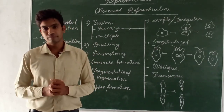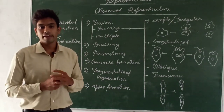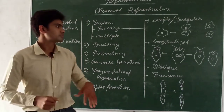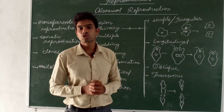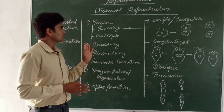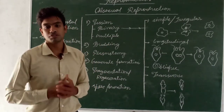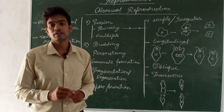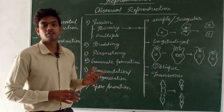Key points about binary fission: first, the nucleus divides amitotically, then the cytoplasm divides, and ultimately two daughter cells are formed — as seen in amoeba. Second, binary fission always takes place under favorable conditions, meaning sufficient availability of water, food, and suitable temperature.